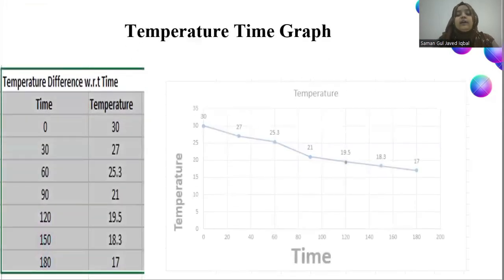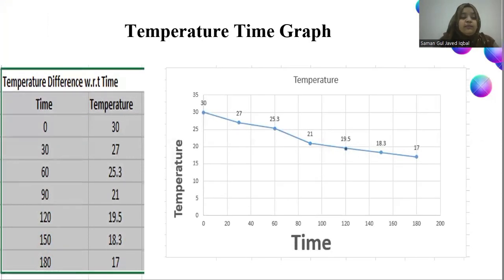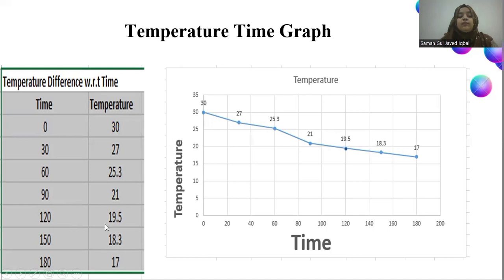Here is the temperature-time graph. At time 0 minutes, the temperature is 30°C; at 30 minutes, 27°C; at 60 minutes, 25.3°C; at 90 minutes, 21°C; at 120 minutes, 19.5°C; at 150 minutes, 18.3°C; and at 180 minutes, 17°C. This shows that temperature and time have an inverse relationship — as time increases, the temperature decreases.